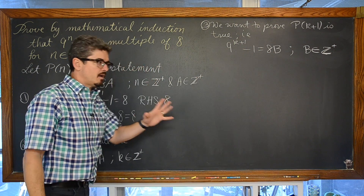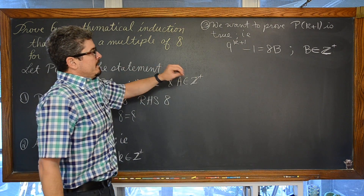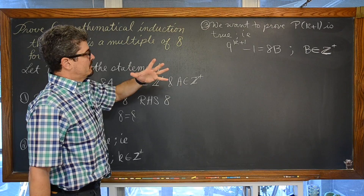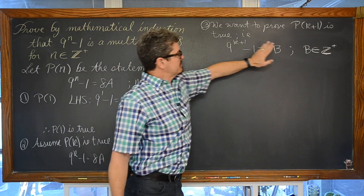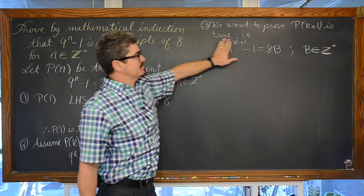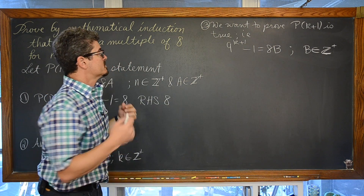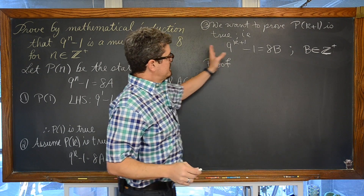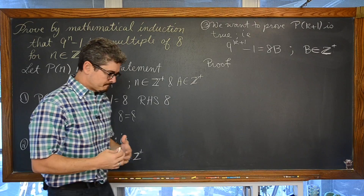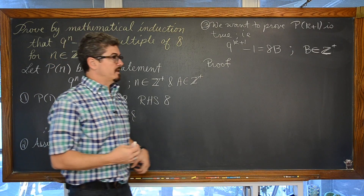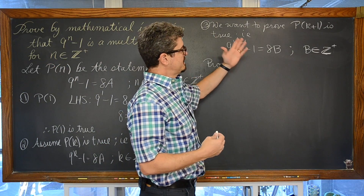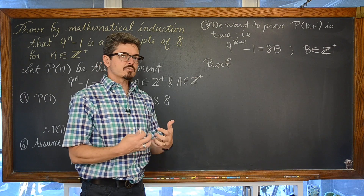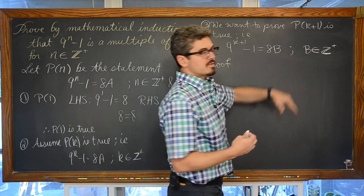That is what I want to prove — this is not the proof yet. It is like the end goal of my proof: I want to show these two sides match. My proof starts where I take one side of the statement — usually the left-hand side, whichever is easiest — and simplify until it matches the other side.